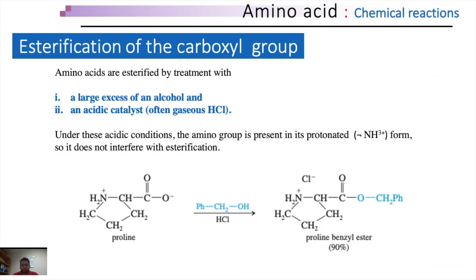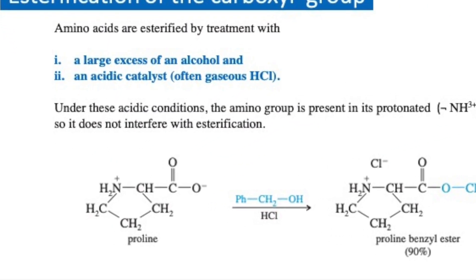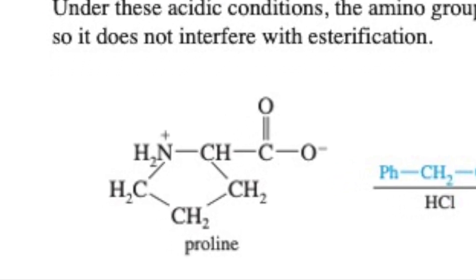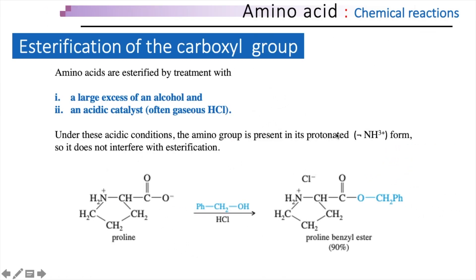Let us begin with the first reaction, which is esterification of the carboxyl group on amino acids. In the presence of a large excess of an alcohol and an acidic catalyst such as gaseous HCl, amino acids are esterified. Under these conditions, the amino group is present in its protonated form — that is, the NH3+ form. The following example illustrates this esterification reaction. Here is a proline residue, which has a unique ring formation because of its internal interaction within its R side chain.